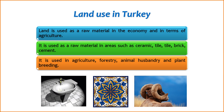Land serves as a crucial resource in various sectors of the economy, playing a vital role in both industrial processes and agricultural activities. 1. Industrial Activities — Ceramic, tile, and brick production. Land is used as a source of raw material for industries involved in the production of ceramics, tiles, bricks, and other building materials. Clay, which is often found in the soil, is a primary component in these manufacturing processes.